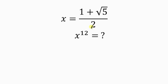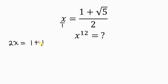Our first step would be to cross-multiply. So I'll multiply x to give 2x, equal to — putting over 1 here — so that when I cross-multiply, it will be 1 times 1 plus the square root of 5, which gives 1 plus the square root of 5.